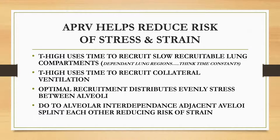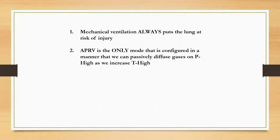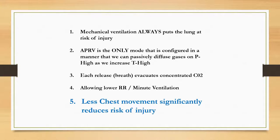Adjacent alveoli splint each other, reducing the risk of strain and over-distention on expiration. Mechanical ventilation always puts the lung at risk of injury — it's not a natural way of ventilating. APRV is the only mode configured to passively diffuse gases on the P-high CPAP phase as T-high is increased. Each release evacuates concentrated CO2. The longer the CPAP phase, the longer diffusion occurs across the alveolar-capillary network, so releases have more concentrated CO2 — more bang for your buck. This allows a lower respiratory rate, lower minute ventilation, less chest movement, and significantly reduced risk of injury.